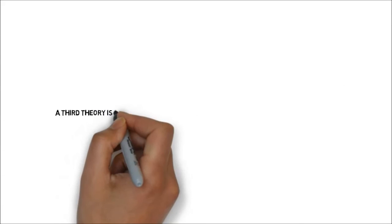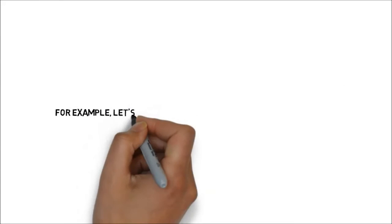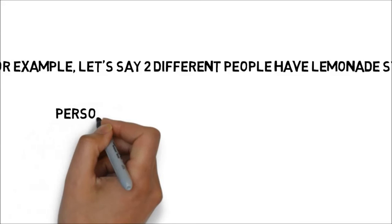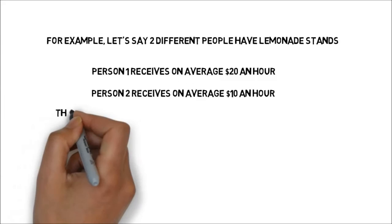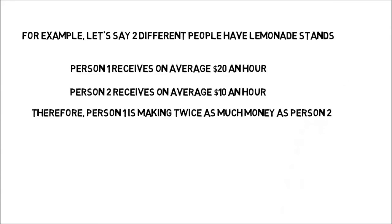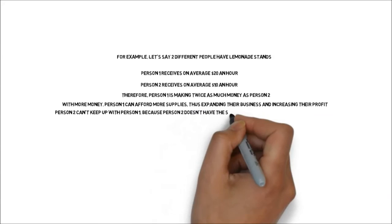A third theory is that Zipf's Law relates to preferential attachment processes. A preferential attachment process happens when things are distributed according to how much is already had. For example, let's say two people have lemonade stands. Person 1 receives, on average, $20 an hour; Person 2 receives, on average, $10 an hour. Therefore, person 1 is making twice as much money as person 2 — in algebraic terms, x equals 2y. With more money, person 1 can afford more supplies, thus expanding their business and increasing their profit. Person 2 can't keep up because they don't have the same economic resources person 1 is receiving.